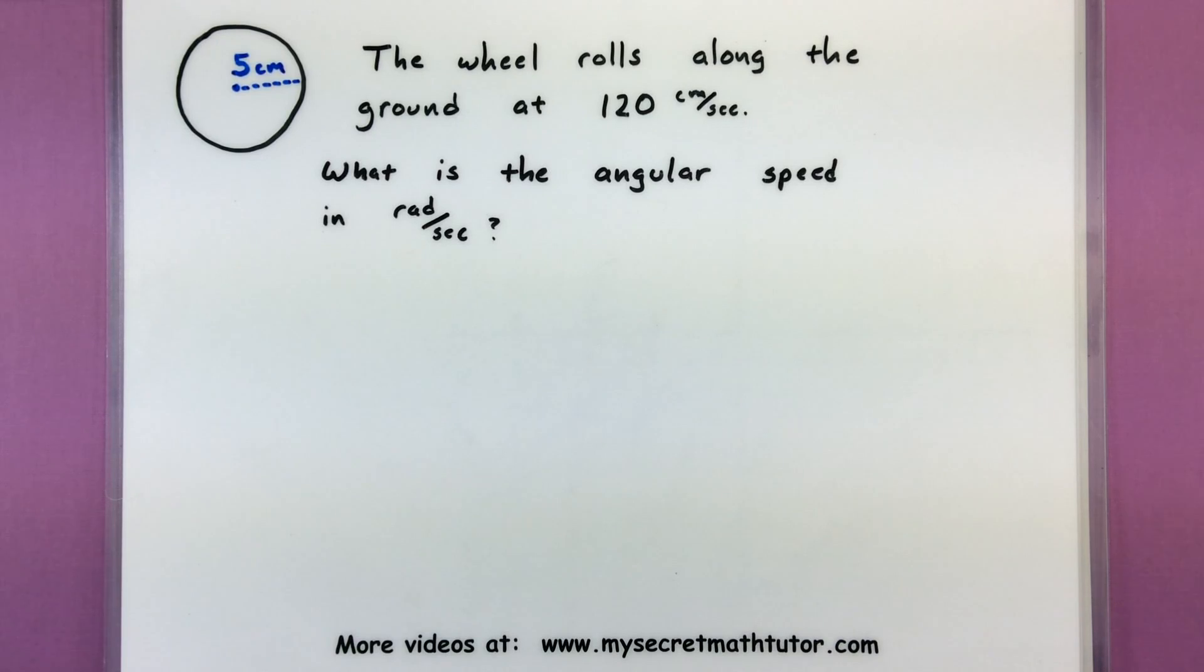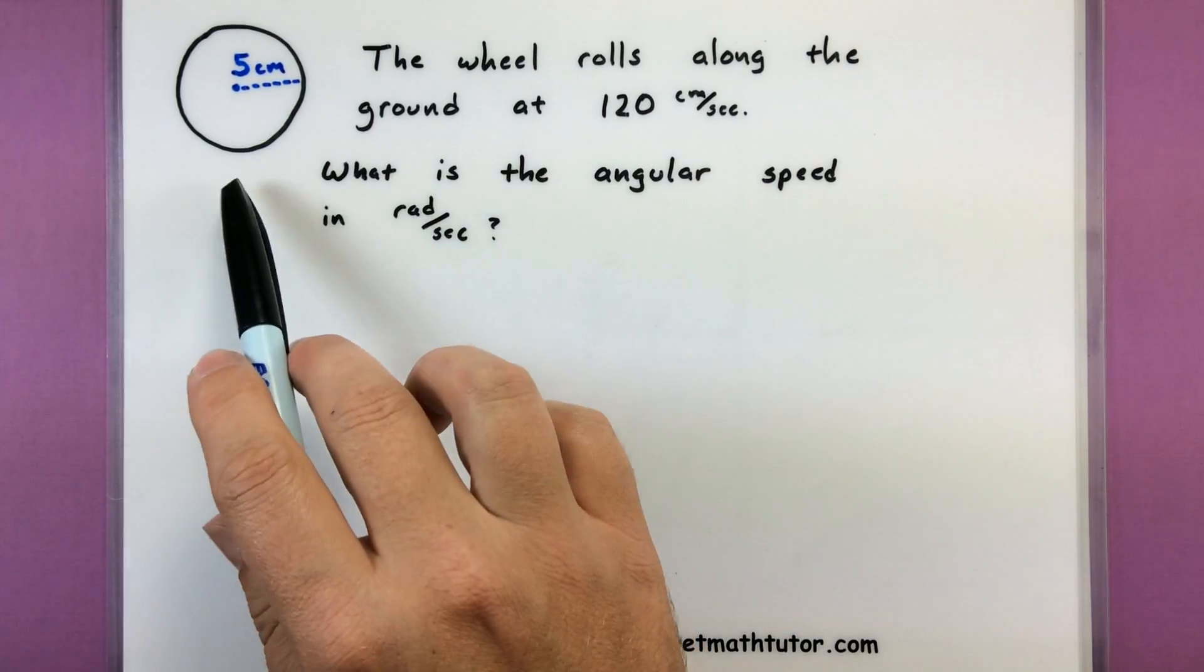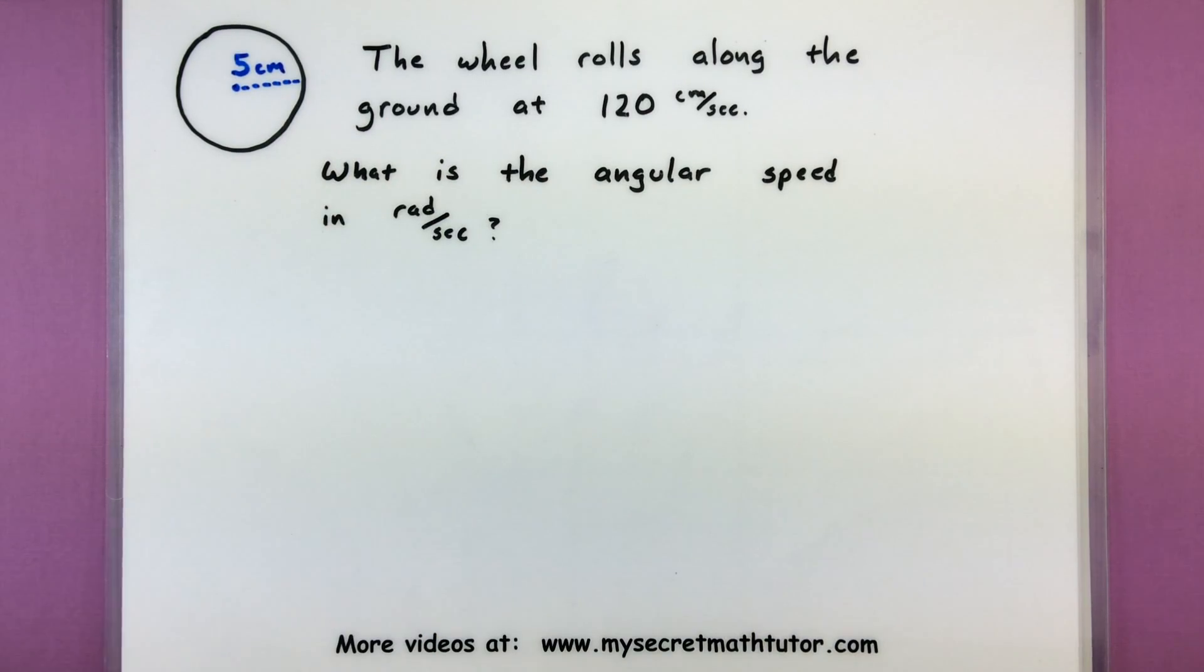For this one we have a wheel that is rolling along the ground at 120 centimeters per second, and this one wants to know well what is the angular speed in radians per second. So again here I have my wheel, it has a nice radius of five centimeters, and we really just want to drop in all the information and see what we get.